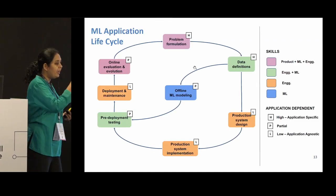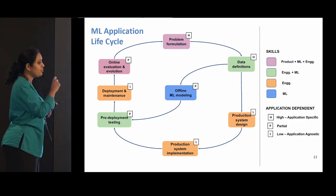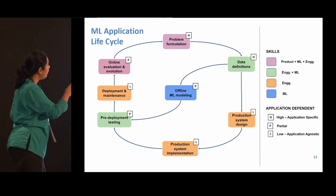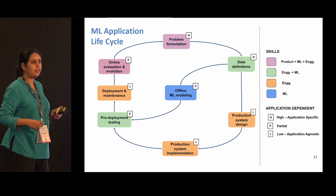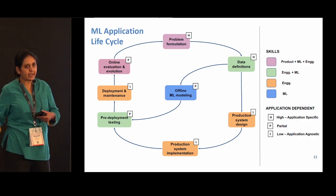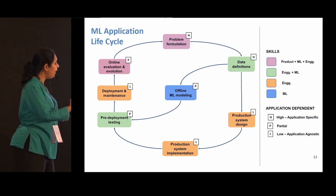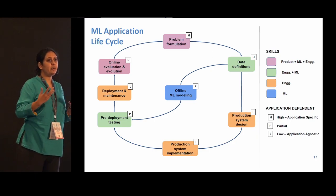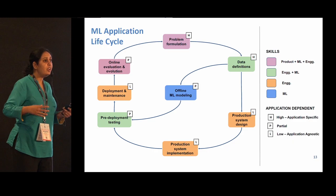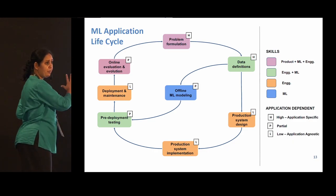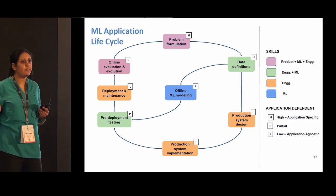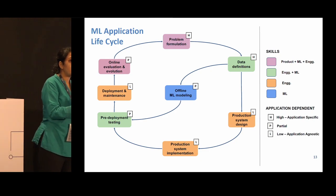To illustrate that idea, let's annotate the different stages with how application-specific the associated work is. Problem formulation and data definitions are very application-dependent and involve a lot of uncertainty. Whereas the engineering effort is typically application-agnostic and reusable across applications, and offline modeling is somewhere in between. Depending on whether you care about getting a particular application right or about a lot of reuse, you could prioritize accordingly. It's also possible to annotate the stages on other dimensions like uncertainty, the effort involved, and skill sets — which is particularly useful when you're trying to manage an ML project.